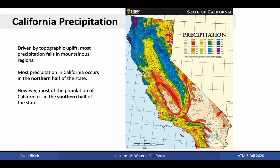Precipitation, and hence water resources, in California are distributed unevenly across the state. The mountainous topography of northern California, along with its proximity to the dominant track for mid-latitudinal storms, is responsible for the vast majority of the state's precipitation. However, the warm and sunny climate of southern California has been a draw for the majority of the state's population. Consequently, there is a need to transport water from the north to the south in order to support those communities.